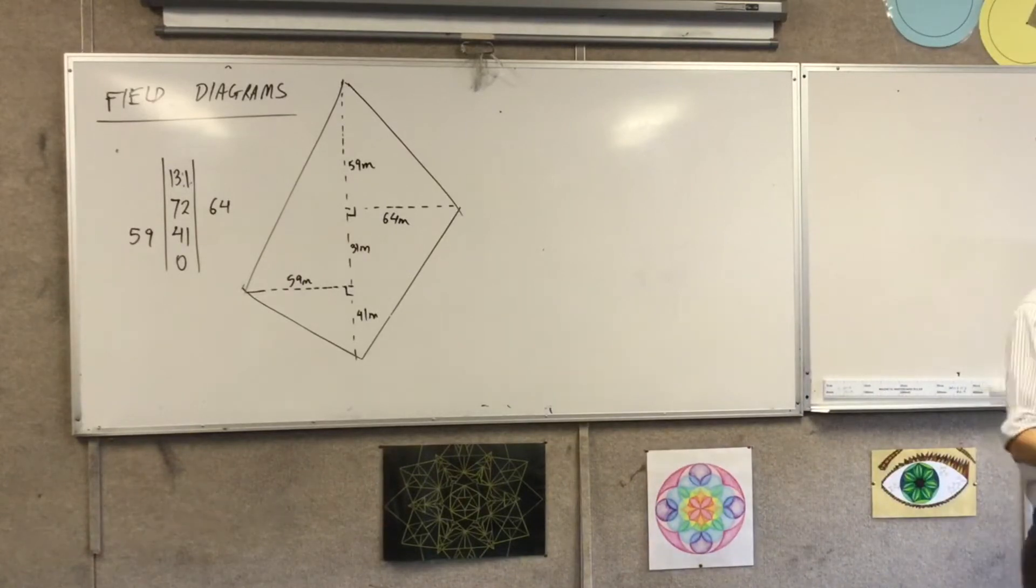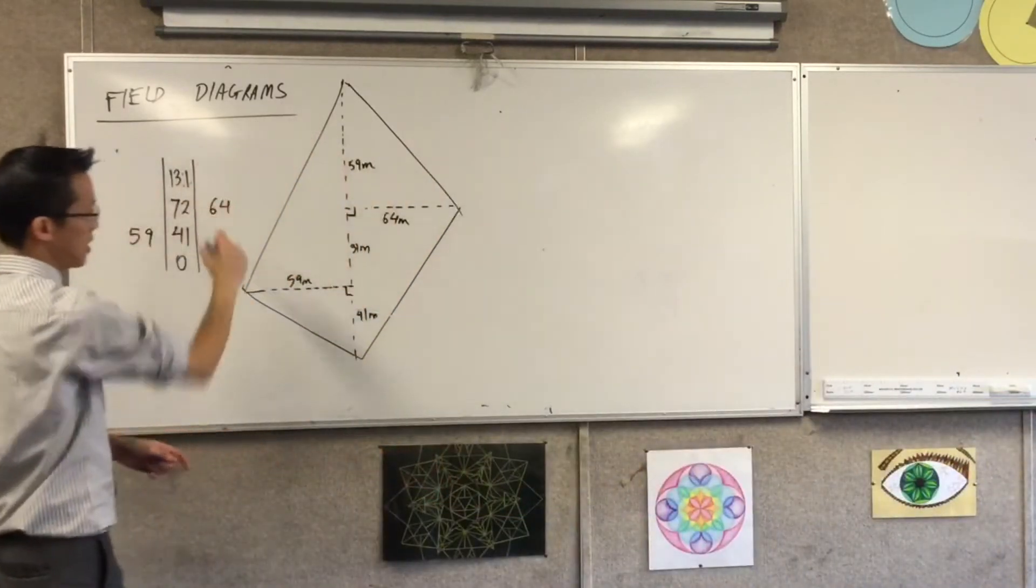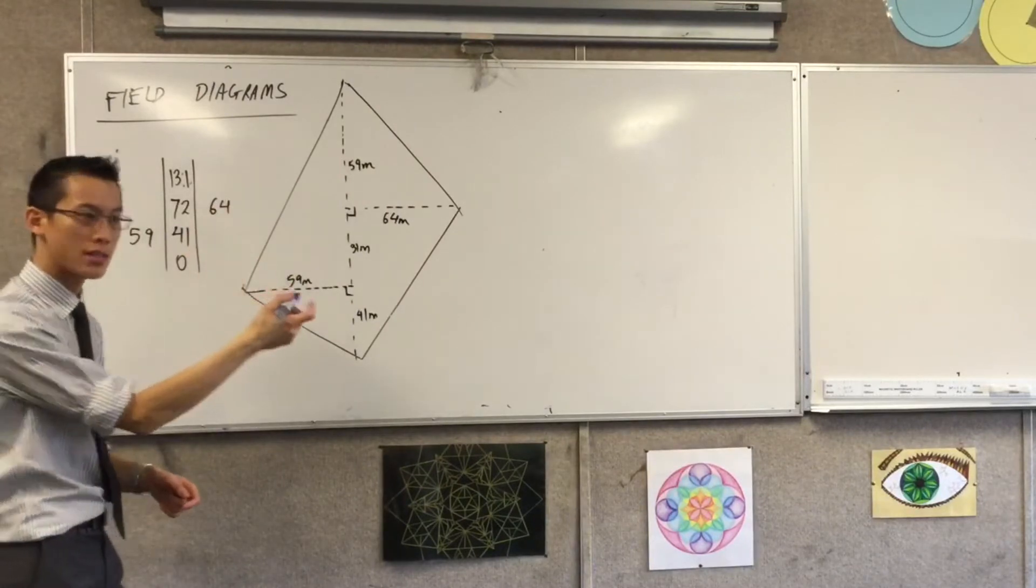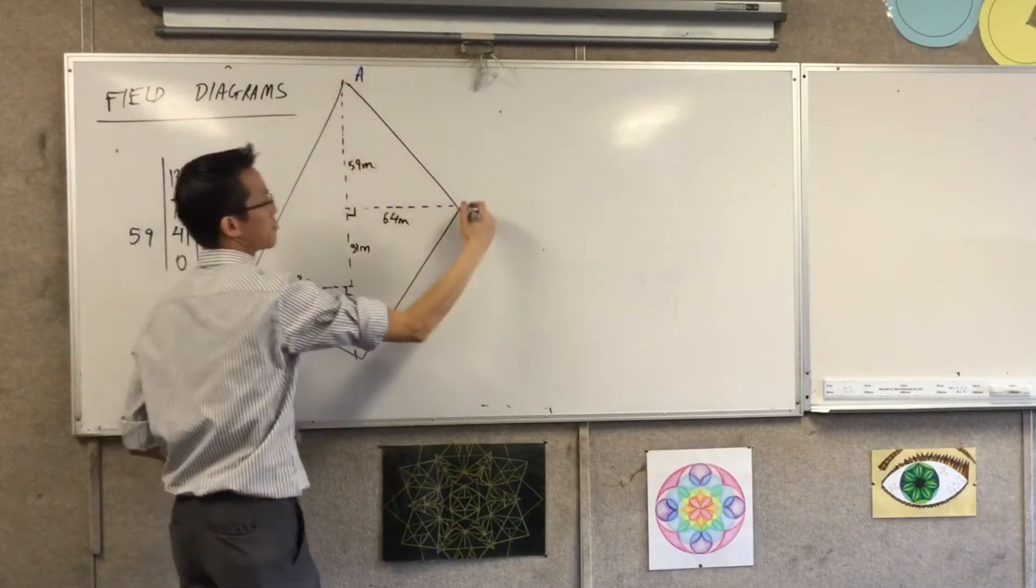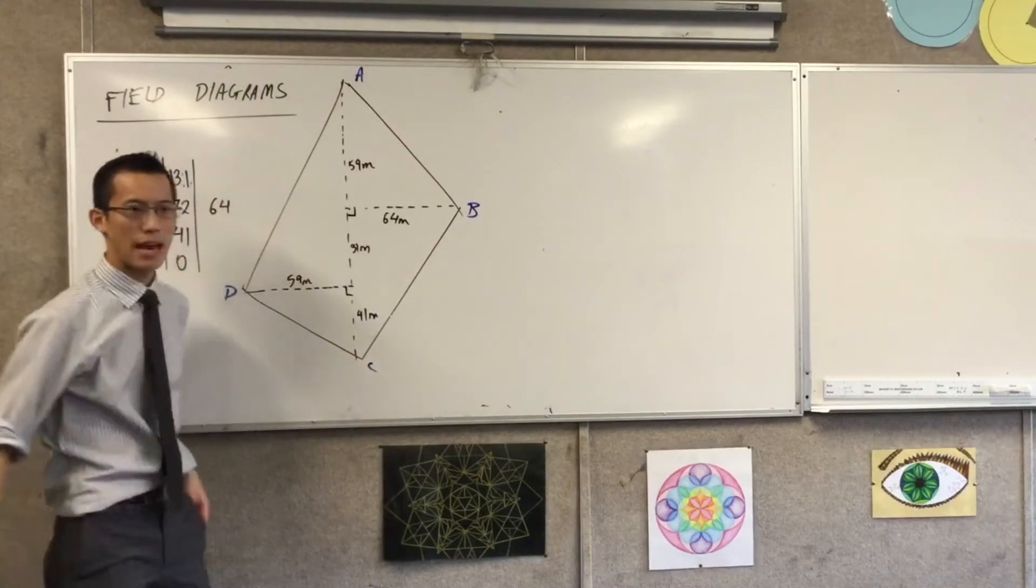So when you have a polygon like this, we tend to give all of the corners, vertices, capital letters as names. So if I call these A, B, C, and D.